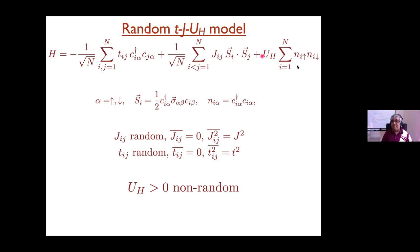Then there's the Hubbard repulsion U_H, which acts on every site and is positive and non-random. If I had only the hopping and Hubbard terms, this would be the well-known Hubbard model with random hopping. To get interesting physics, we need to put in explicitly an exchange interaction J_ij, which will also be random. You might ask why we need J_ij if the Hubbard term generates exchange — but in this infinite-range limit, the hopping scales as 1/√N, so the generated exchange is ~t² ~ 1/N and is negligible. We do have to put this term in by hand.